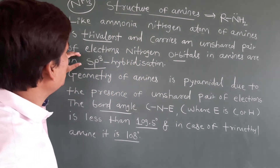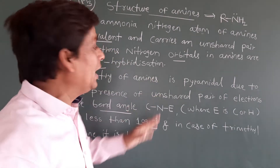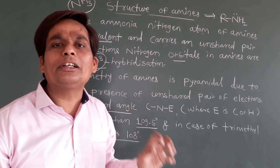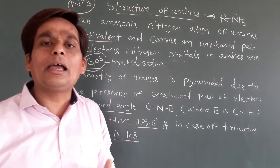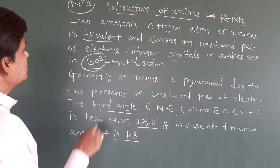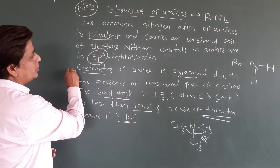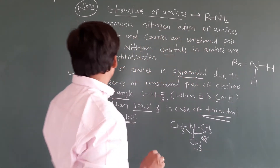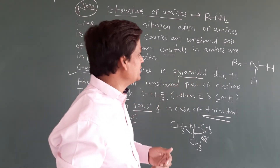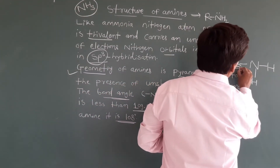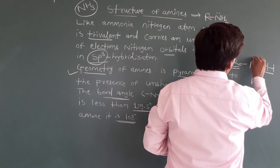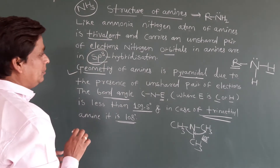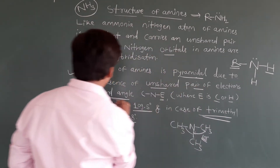The structure of amines: nitrogen is trivalent and undergoes sp3 hybridization — meaning one s and three p orbitals are involved. Now see the geometry of amines. The geometry of amines is pyramidal — it is pyramidal in shape due to the presence of the unshared lone pair of electrons on the nitrogen.